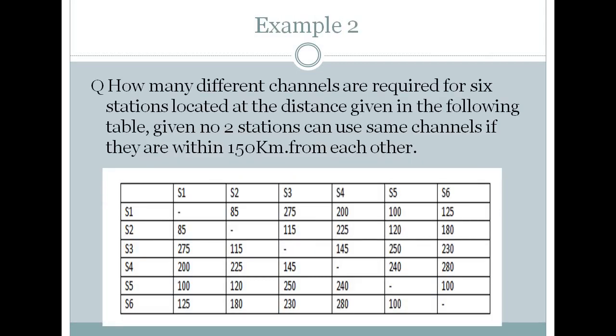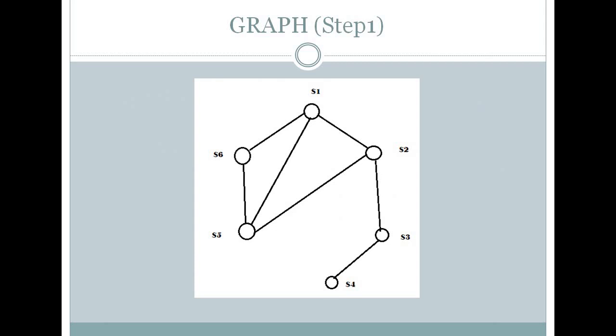Now consider another example which says how many different channels are required for six stations located at distances given in the following table, given no two stations can use the same channel if they are within 150 kilometers from each other. We could use chromatic number, that is painting a graph, to find the solution to this problem. Considering this table, we could see that many of the channels are less than 150. According to that, step number one would be making a graph from this table.